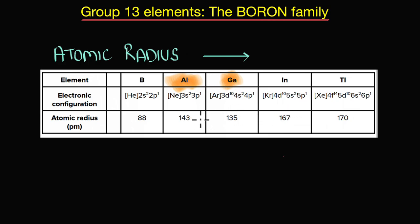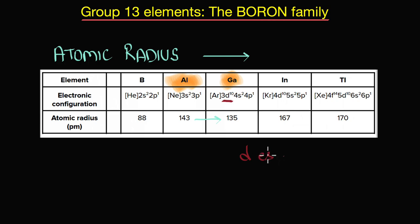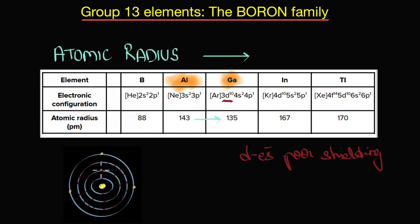From aluminium to gallium, the atomic radius actually decreases. The major difference between aluminium and gallium is the completely filled 3d electrons, and we know that d electrons have very poor shielding effect.